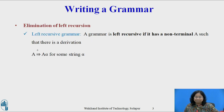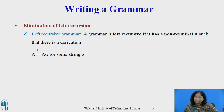Elimination of Left Recursion: A grammar is left recursive if it has a non-terminal A such that there is a derivation A derives Aα in one or more steps for some string α. In a left recursive grammar, the leftmost symbol on the right side of the production is the same as the non-terminal on the left side of the production. Top-down parsing methods cannot handle left recursive grammars, so a transformation that eliminates left recursion is needed.